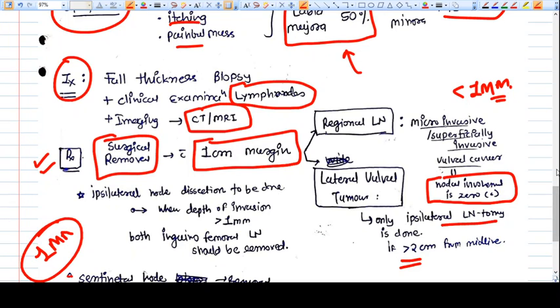By far, you remember that surgical intervention is the most important. You remove the lesion with one centimeter of disease-free margin, and if you see in the histopathological examination the invasion is of more than one millimeter, then you also need to remove lymph nodes too. That's clear.